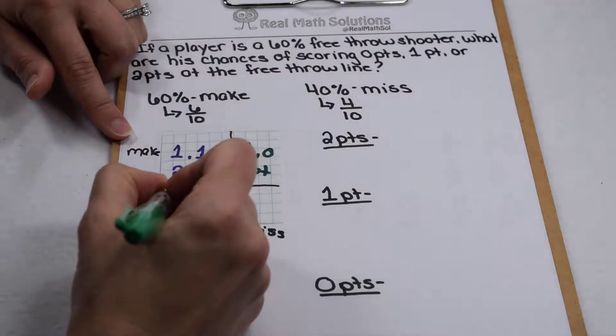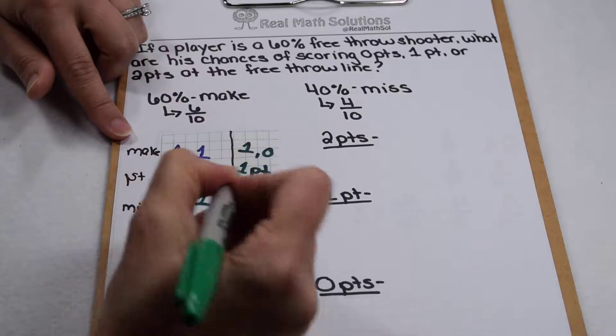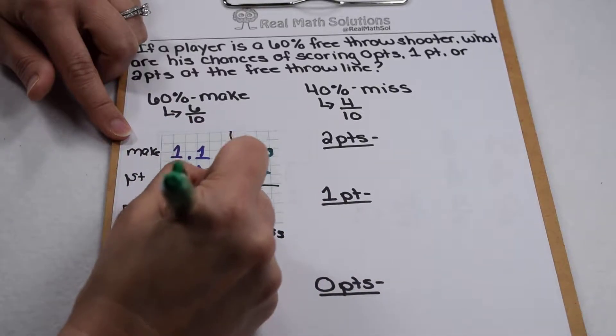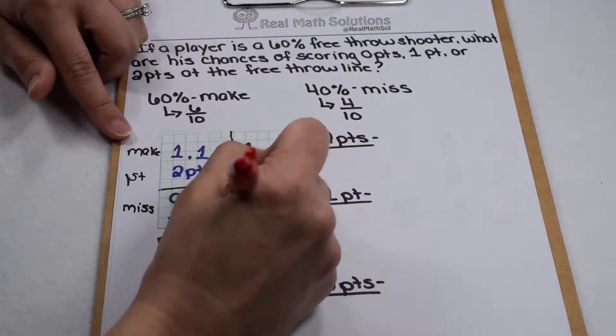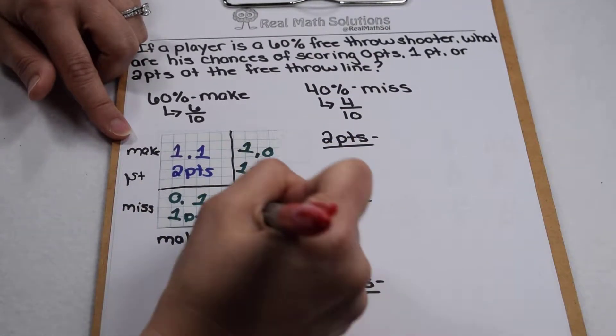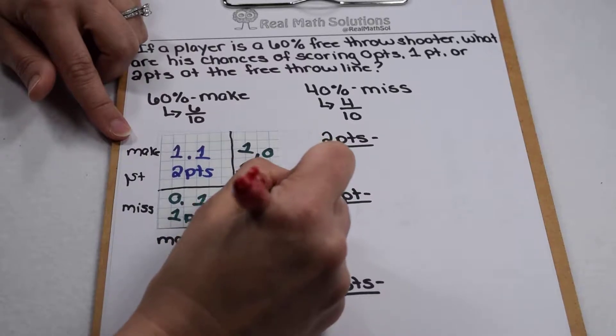Same thing down in this corner. We would miss the first shot, but score the second shot. So this box would also represent 1 point. This box, we would miss the first shot, miss the second shot. So all together, we would score 0 points.